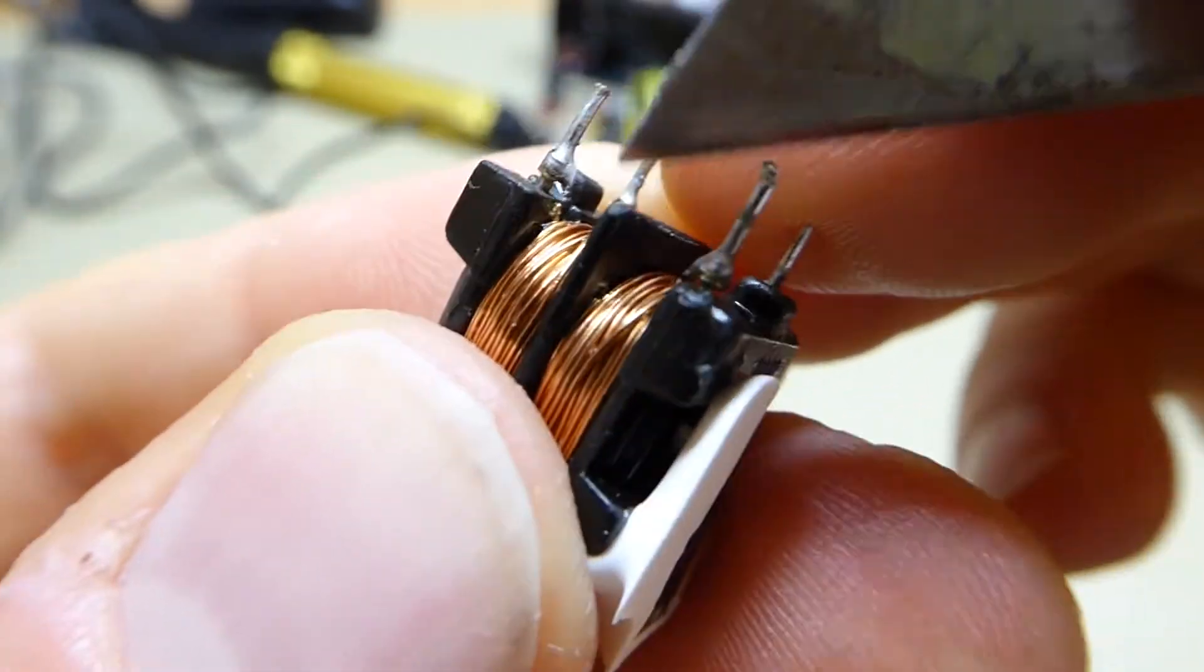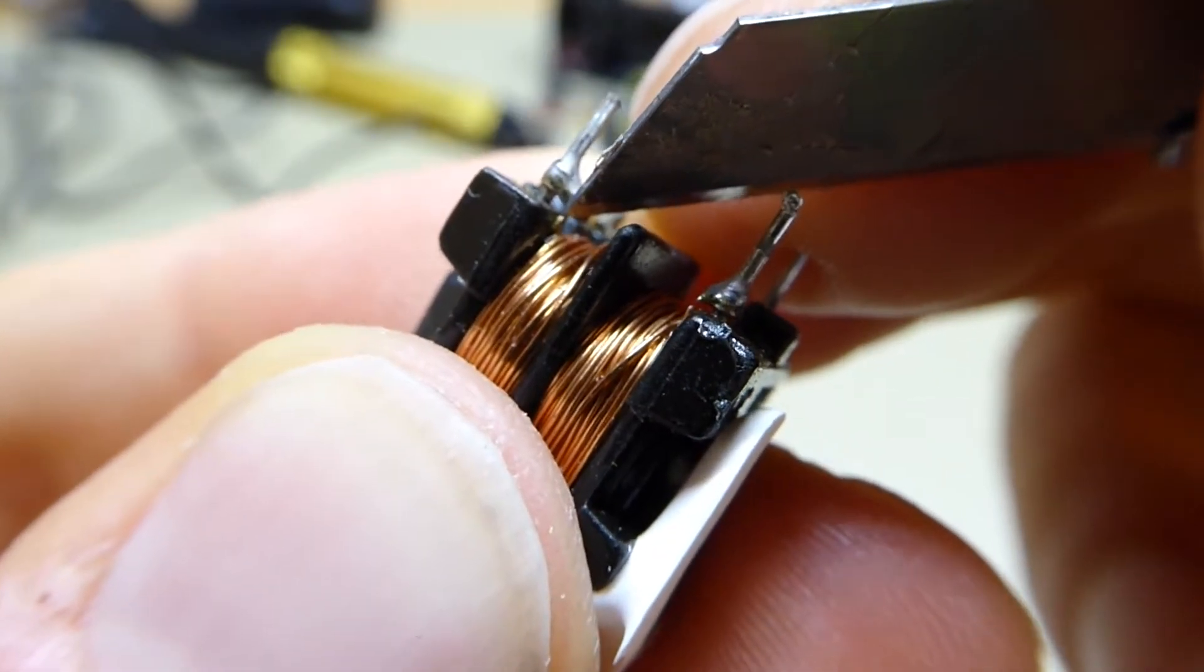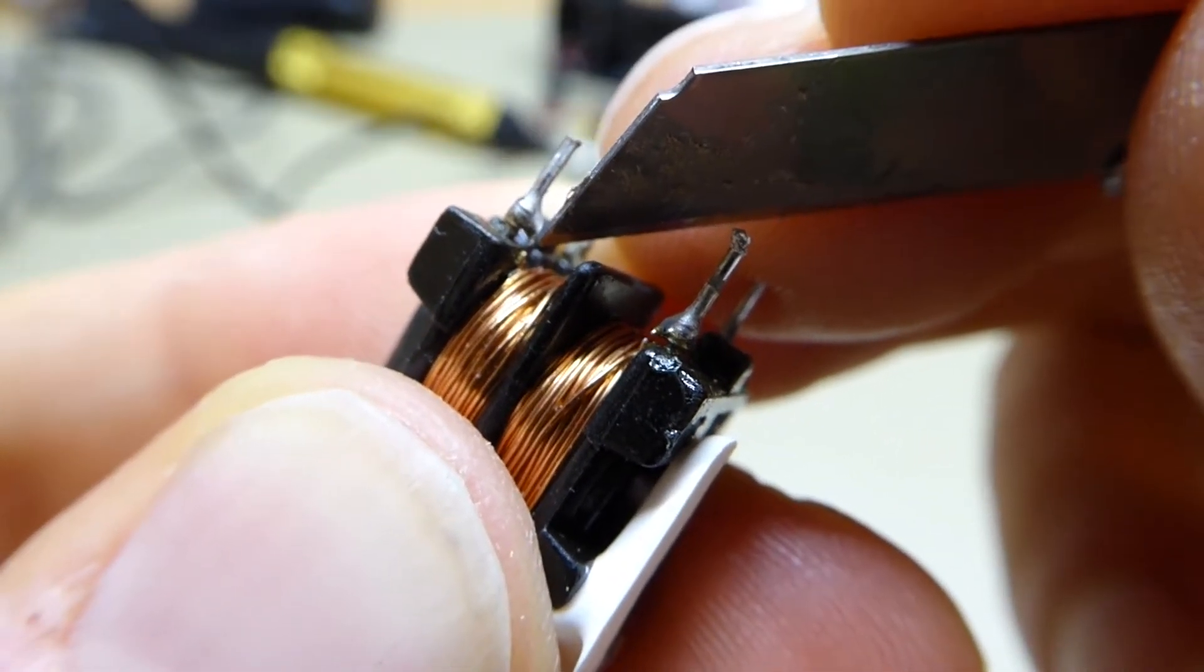And the exact same thing on the same side of the other winding. Here you can see it comes out here, and when it goes to the pin it's cut.